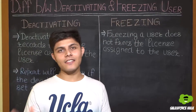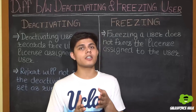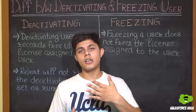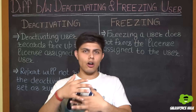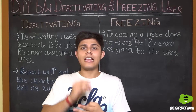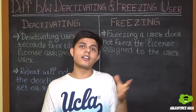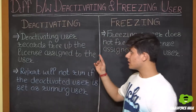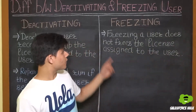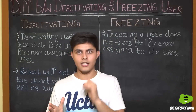The most important difference between deactivating and freezing a user is that deactivating a user frees up the license, but freezing a user does not free up the license for use by another user. For example, if you have five Salesforce licenses and all are in use, deactivating a user frees that license for another user. But if you freeze a user, that license is not yet freed and cannot be used by any other user. Deactivating a user record frees up the license assigned to the user; freezing does not.